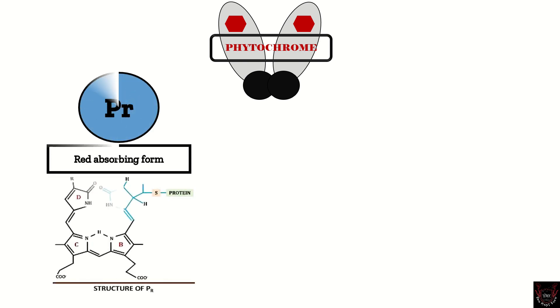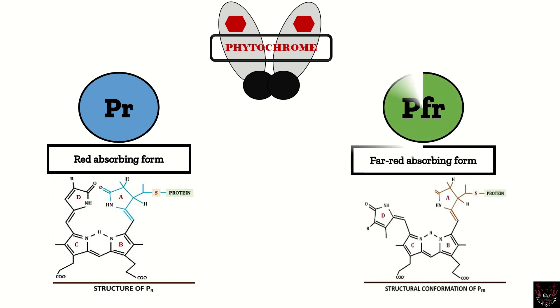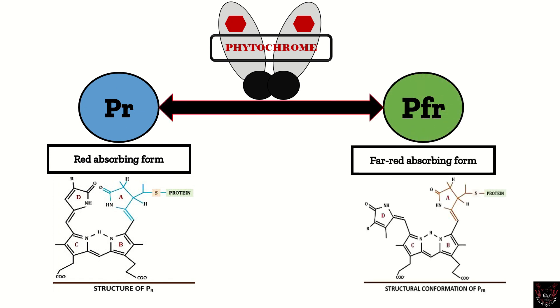Phytochrome is present in two different forms: Pr, which is the red light absorbing form, and Pfr, which is the far-red light absorbing form.